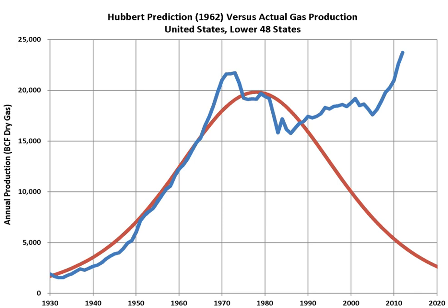The Hubbert peak theory says that for any given geographical area, from an individual oil-producing region to the planet as a whole, the rate of petroleum production tends to follow a bell-shaped curve. It is one of the primary theories on peak oil. Choosing a particular curve determines a point of maximum production based on discovery rates, production rates, and cumulative production. Early in the curve, the production rate increases due to the discovery rate and the addition of infrastructure. Late in the curve, production declines because of resource depletion.